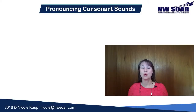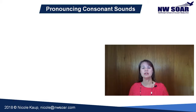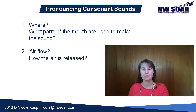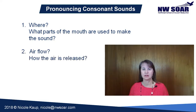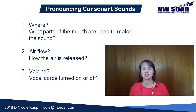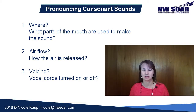There are three things to know about consonant sounds in English. First, you need to know WHERE — what parts of the mouth are used to make the sound? Second, air flow — how is the air released from the mouth with this sound? And third, voicing — do your vocal cords turn ON or OFF to produce this sound? So let's take a look at the F and the V sounds and how to pronounce them looking at these three characteristics.